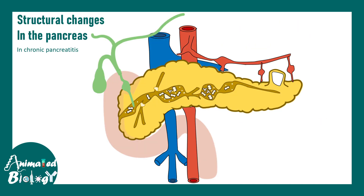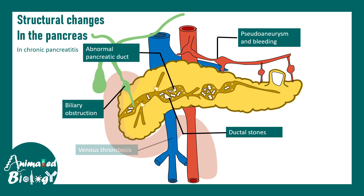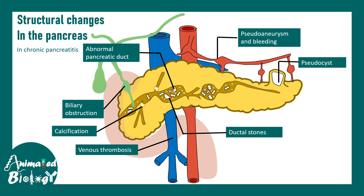The structural changes that occur in the pancreas during chronic pancreatitis include abnormal pancreatic ducts that look swollen and dilated, with stones inside. There can also be pseudoaneurysm and bleeding, biliary obstruction, venous thrombosis, calcification of specific portions of the pancreatic ducts, and pseudocyst formation. All of these structural anomalies are associated with chronic pancreatitis.